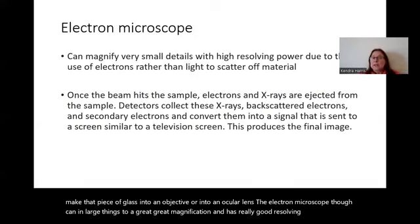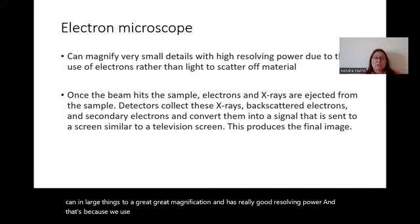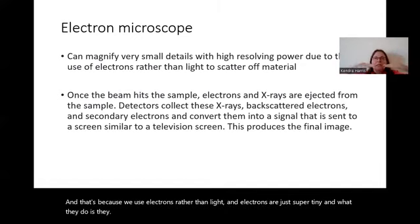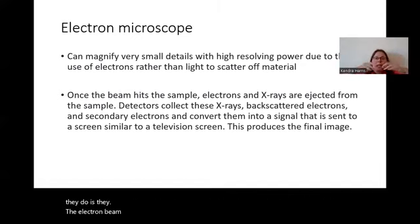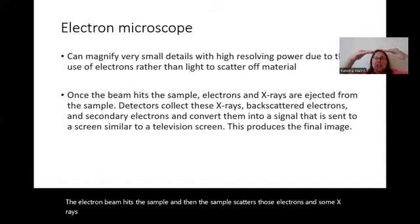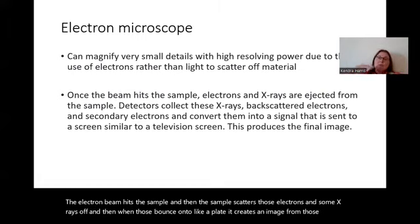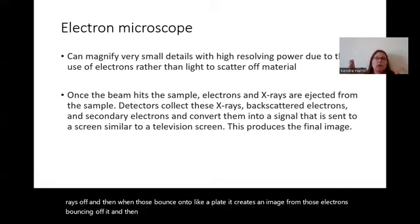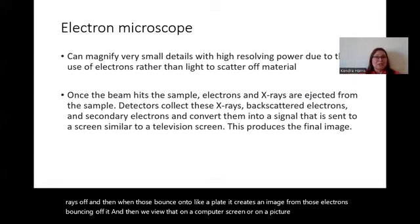The electron microscope can enlarge things to great magnification with really good resolving power, and that's because we use electrons rather than light. Electrons are super tiny. What happens is the electron beam hits the sample, the sample scatters those electrons and some X-rays. When those bounce onto a plate, it creates an image from those electrons bouncing off it, which we then view on a computer screen or picture.